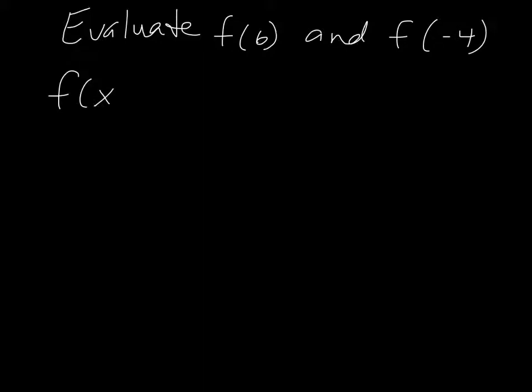This is what one of your problems might look like on your quiz on Friday. It'll say evaluate f of 6 and f of negative 4, which you know is just function notation—it's just telling you what to plug into the function. Here's the function: f of x equals absolute value of x minus 4 plus 2 times absolute value of x.